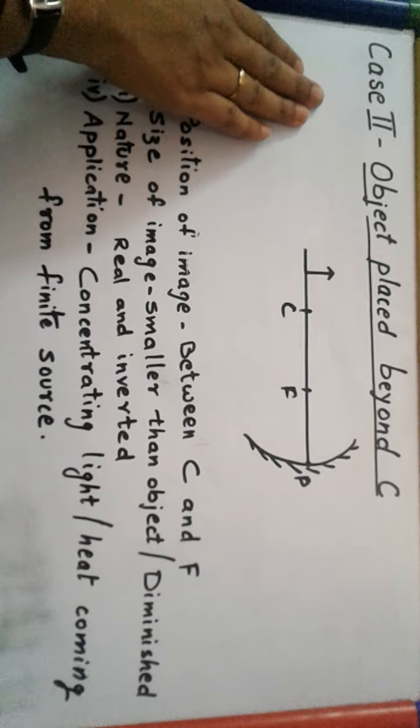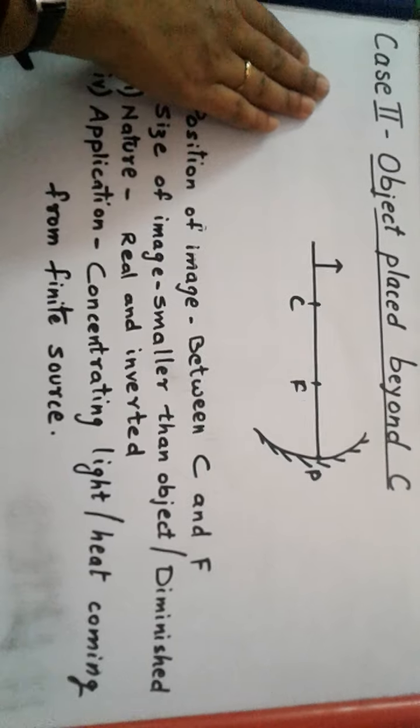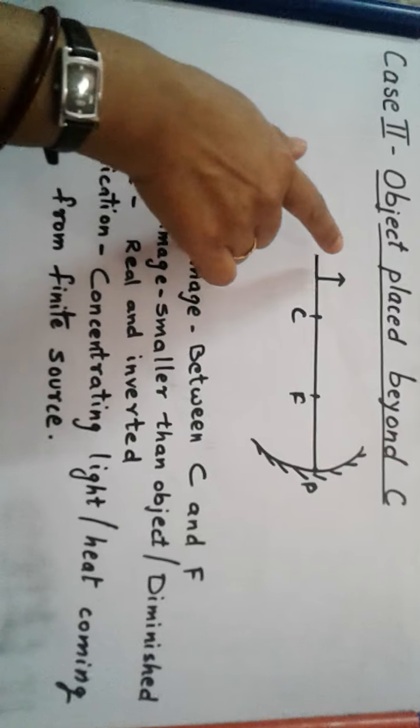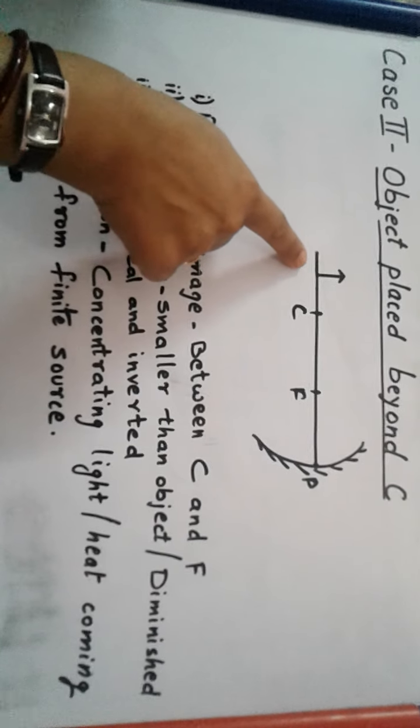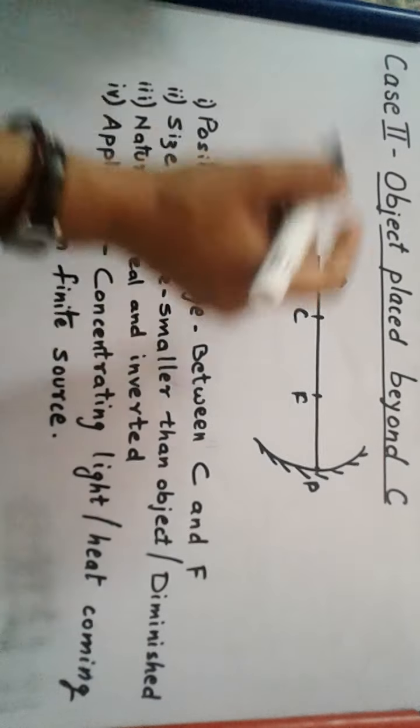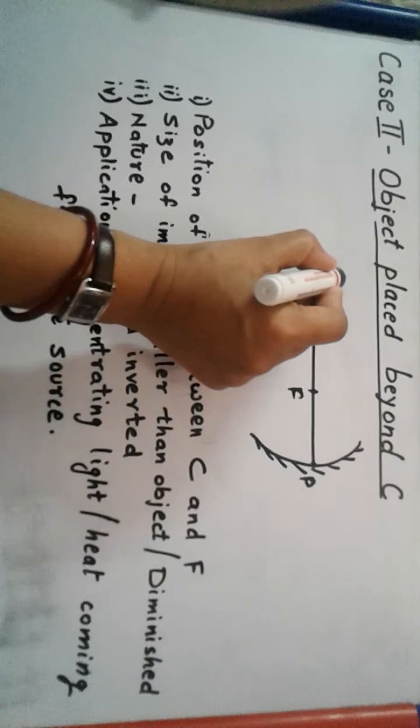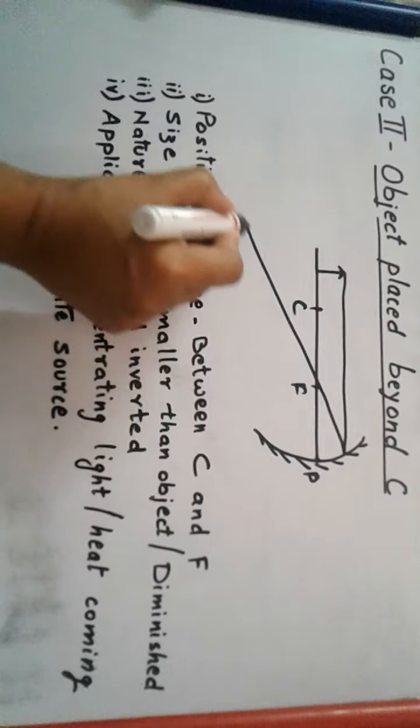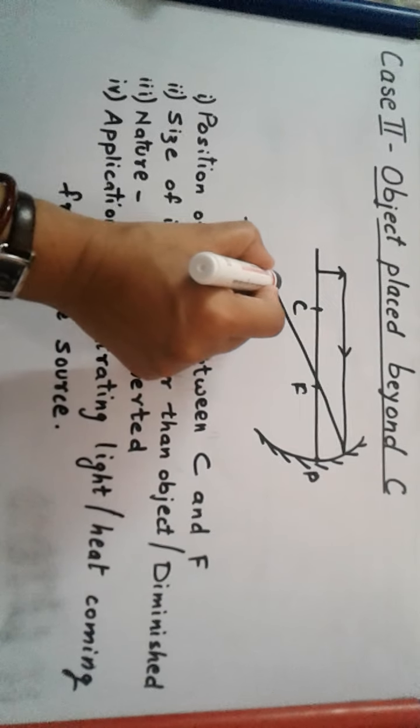Again, I am going to discuss the same case—object placed beyond C. The reason is that in the last video I already drew the object beyond C and the first ray. As it is, it will be parallel to the principal axis, and after reflection it is going to pass through the focus. This was the first ray.